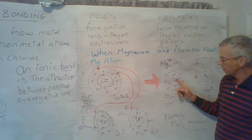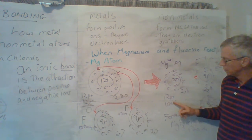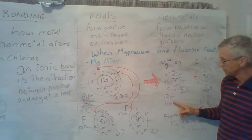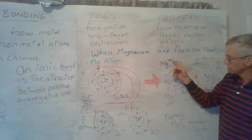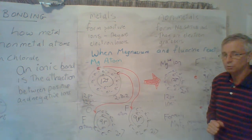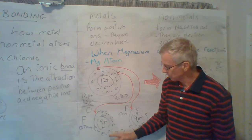And in that ion, we have 12 positive protons in the nucleus still. But we only have 10 negative electrons here. So, overall, it has a 2 plus charge, two extra positives, or if you like, two missing negatives.